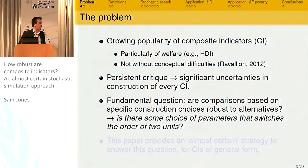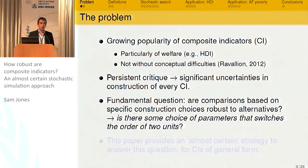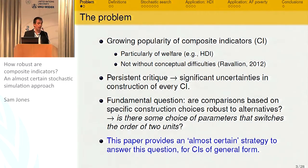The fundamental question I look at in this paper is: are our comparisons — for example, between two countries or two different groups in the same country — robust to the specific construction choices used to develop that indicator? Or more simply, is there some choice of parameters that switches the order of two units? And my answer is yes, we can do that, almost certainly. I'll explain what I mean by almost certainly.